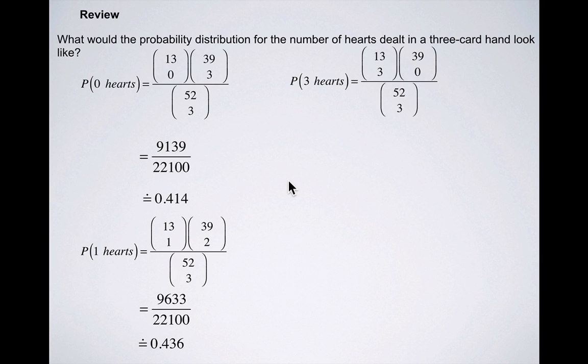Lastly, because we've already done the calculation for two hearts, the number of ways we can have a hand that is all hearts out of the three cards is 13 choose 3, times 39 choose 0. This will give us a number of ways that we can have three hearts out of three cards, divided by the sample space, and this works out to be approximately 1.3%.